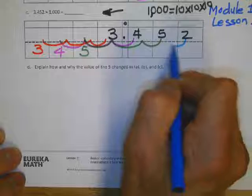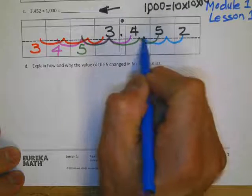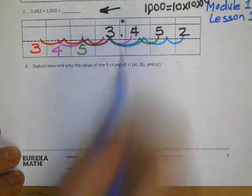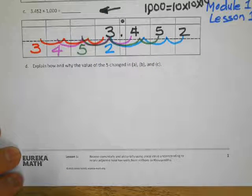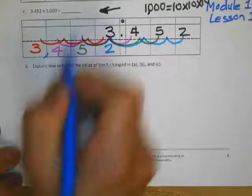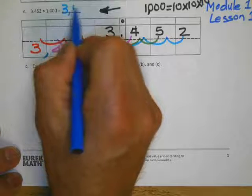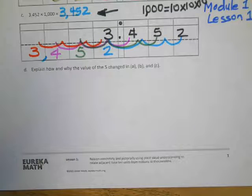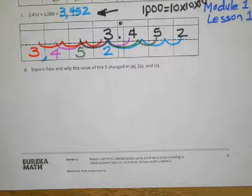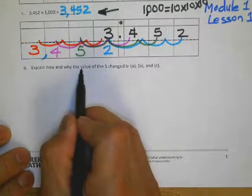Times ten, times a hundred, times one thousand, so that becomes two. So the answer for the problem is now three thousand four hundred fifty-two. Now we are going to explain how the value of the digit